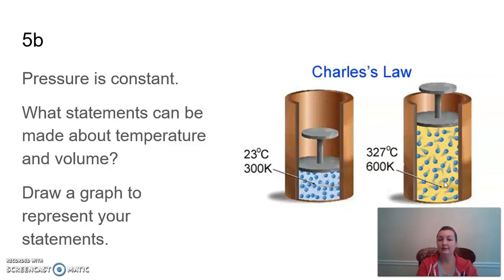We can also see right off the bat, our volumes are different. This is a lot less volume than this container. Because it's stating pressure is constant, we can now make some statements about temperature and volume. We can say that as we increase temperature, so we went from 300 to 600. As we increase temperature, what happened to our volume? Our volume increased. It was just a little bit and it practically doubled in size. It doubled in temperature, it practically doubled in volume as well. So that would be a really good statement to make.